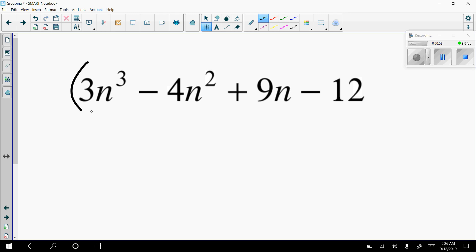So we've got our four terms, so we can split the middle. So the first set, to take out the GCF, it looks like it's going to be an n squared.